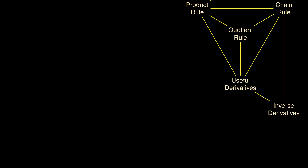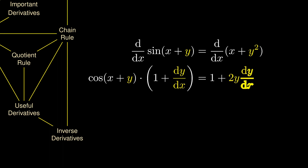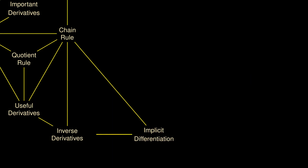What about the expression sin(x + y) = (x + y)²? There is no way to isolate y purely in terms of x, but it turns out we can still calculate dy/dx. We apply the derivative on both sides. On the left side, x + y lies inside the sine function, so we use the chain rule: differentiating sine gives cosine, and differentiating x + y gives 1 + dy/dx. On the right side, the derivative of y² is 2y times dy/dx by the chain rule. Using a little algebra, we can isolate dy/dx. This is called implicit differentiation, since y is trapped inside the function implicitly.